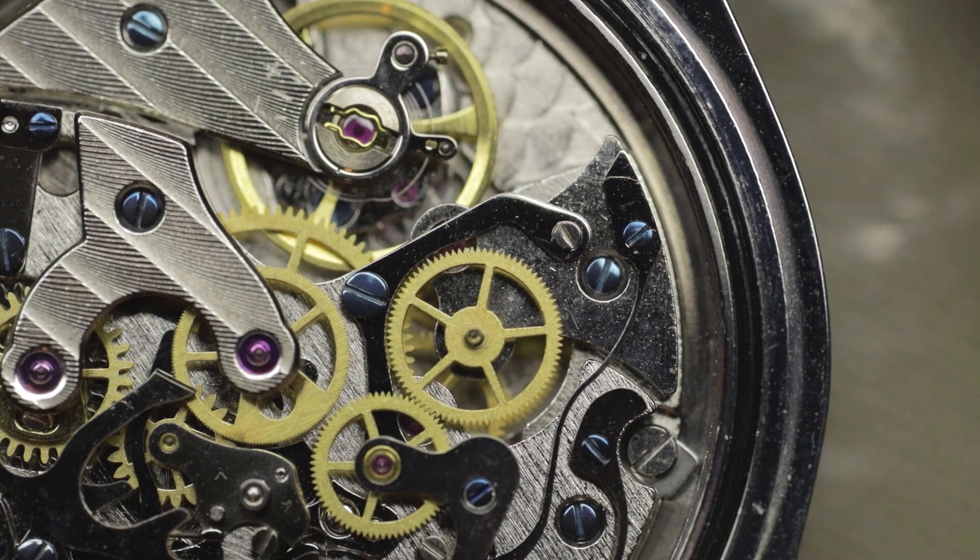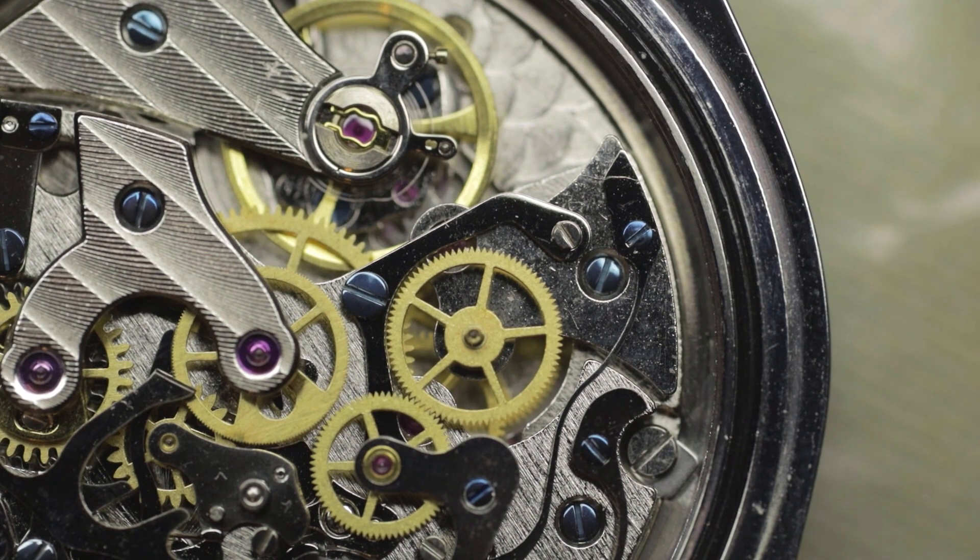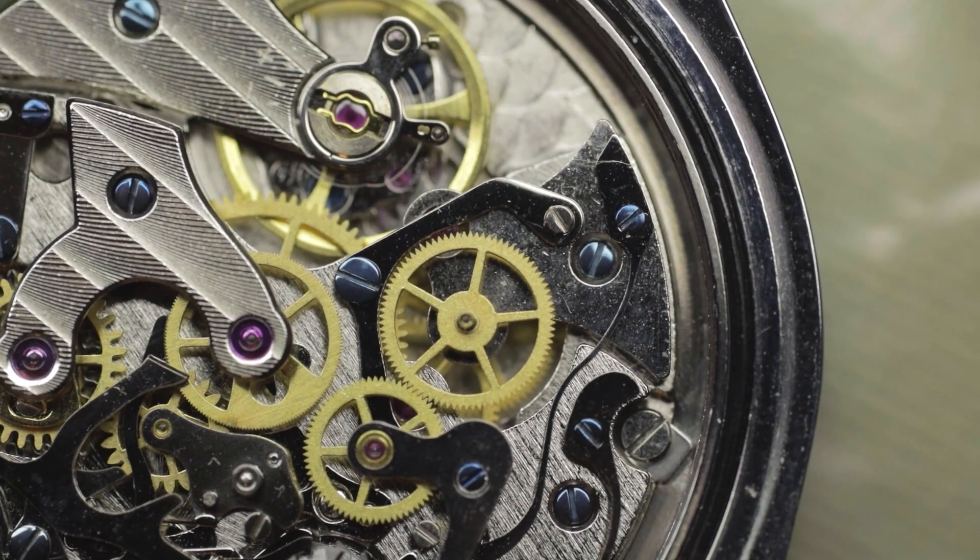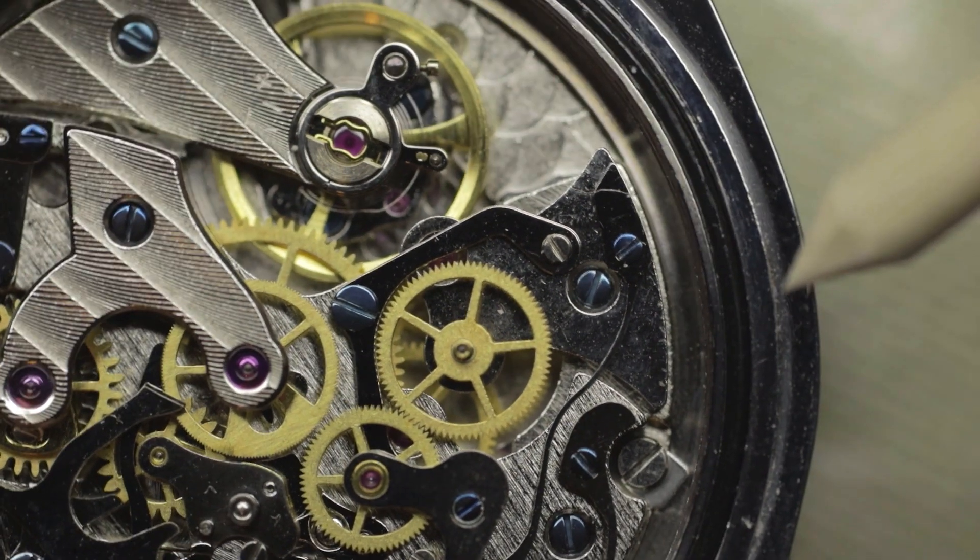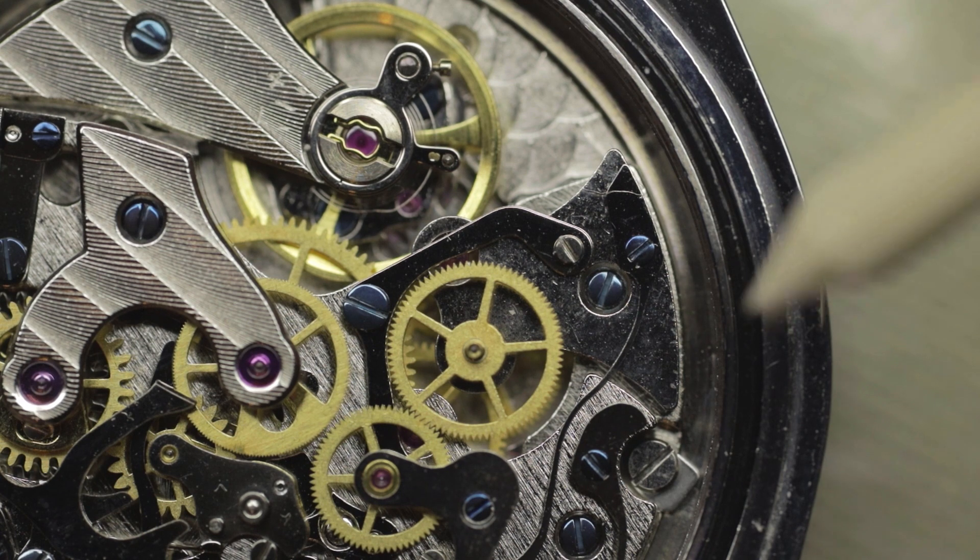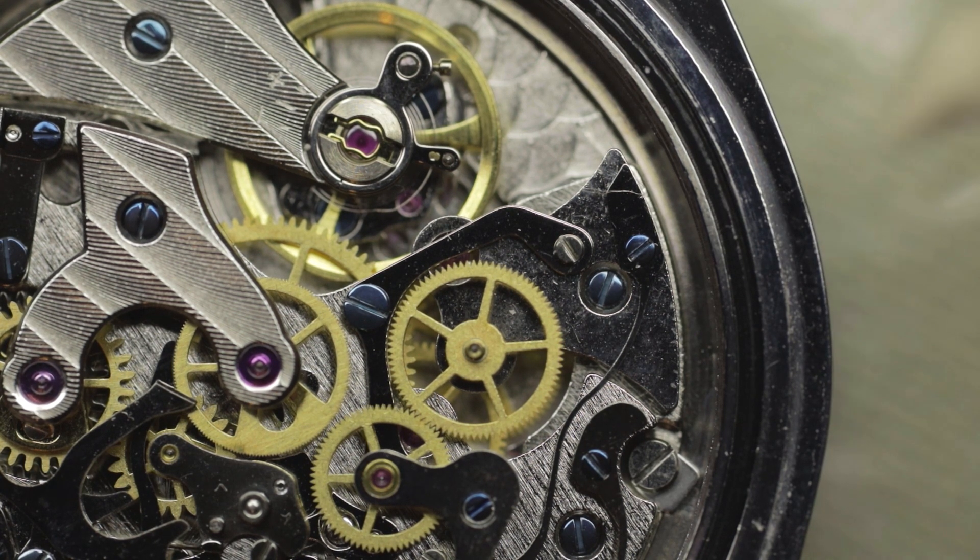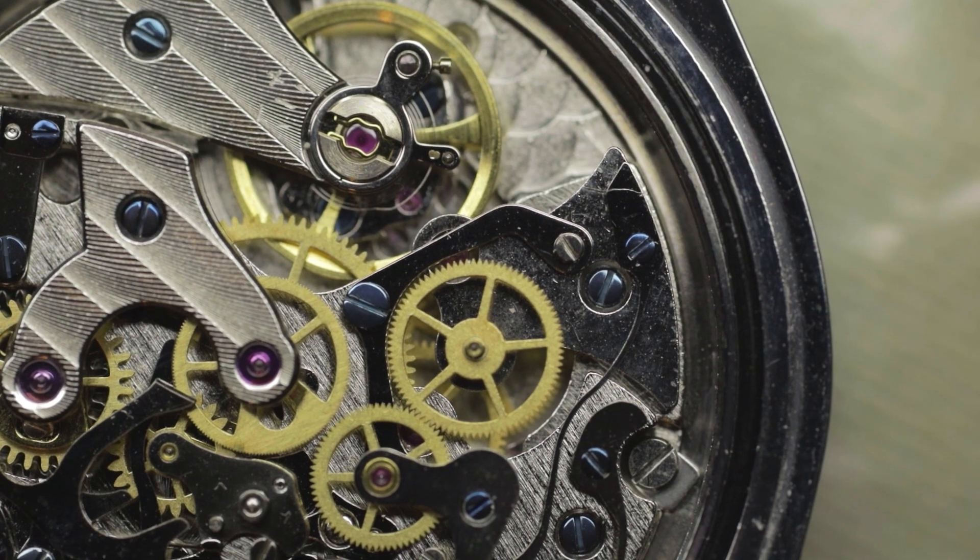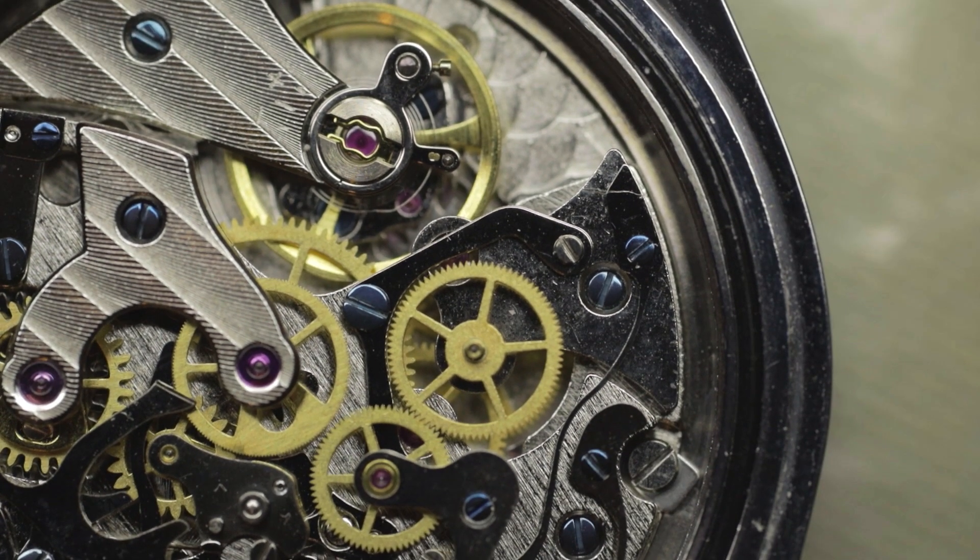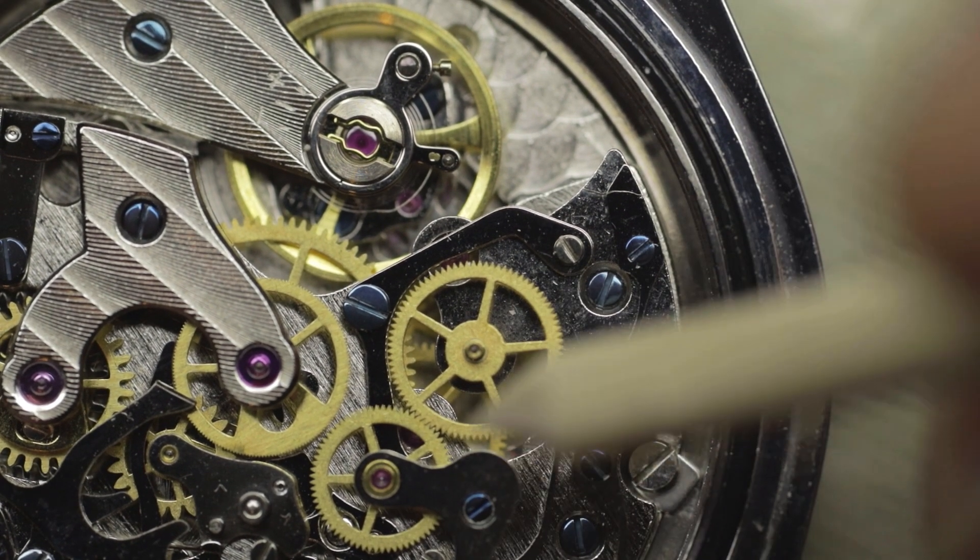A short seconds hand sweeping around at 21,600 vph is going to look about as smooth as a large seconds hand sweeping at 28,800. So when you start the large center sweep seconds hand it will look a little bit more stuttery generally than the small sweep seconds. However it shouldn't have an obvious stutter.